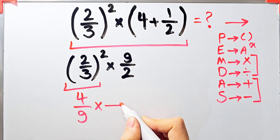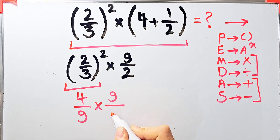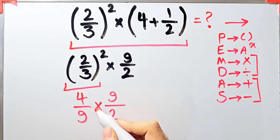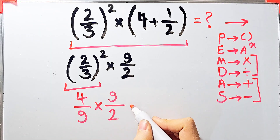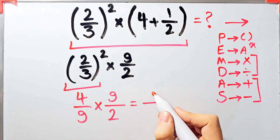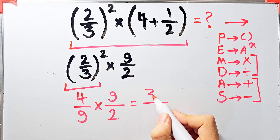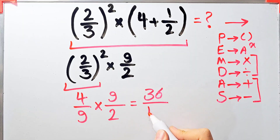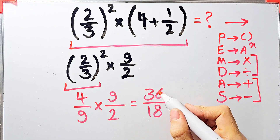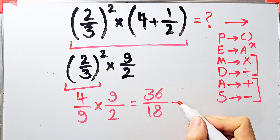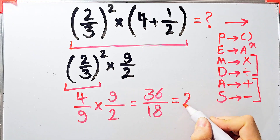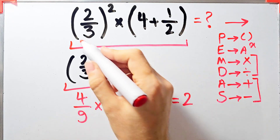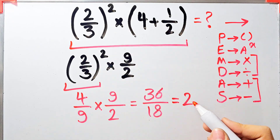Now we have four over nine times nine over two. Four over nine times nine over two equals 36 over 18, and 36 over 18 equals two. The final answer of this question equals two.